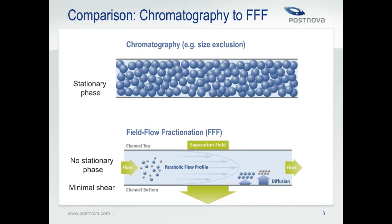In FFF, the separation principle is different. You have a field perpendicular to a channel flow and the combination of these results in fractionation. The separation occurs in a long thin open channel, typically 10 to 30 centimeters long but only a few hundred microns thick. The liquid flow through the channel is parabolic — very slow along the top and bottom, and much faster in the center. When a sample is injected, the field pushes particles towards the channel bottom. Smaller particles diffuse more readily into the faster flow profiles closer to the channel center and elute to detectors more quickly. Larger particles stay in the slower flows and elute later. So the elution order for FFF is the opposite of SEC: small particles first, larger particles later. Since there's no stationary phase, it also has the advantage of being a low pressure, low shear, gentle separation, which is important for preserving aggregates or agglomerates.